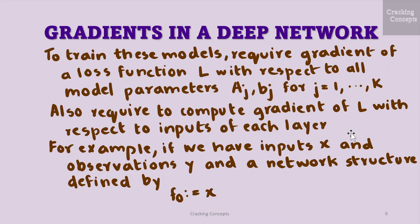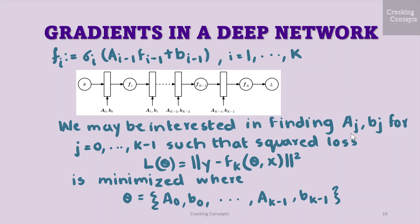This also requires us to compute the gradient of L with respect to the inputs of each layer. For example, if we have the inputs x and observations y and a network structure defined by f0 given by x, fi which can be written as sigma i of A i-1 times fi minus 1 plus b i-1 where i ranges from 1 to k, then we may be interested in finding aj, bj for j equal to 0 to k minus 1 such that the squared loss L of theta given by the norm of y i minus fk of theta x, the whole squared, is minimized. Here theta is a0, b0, ..., ak-1, bk-1.